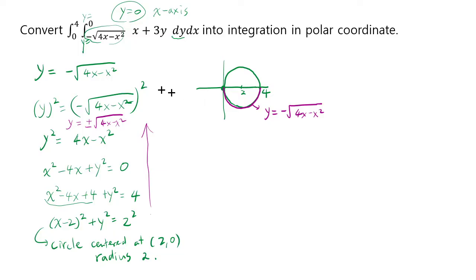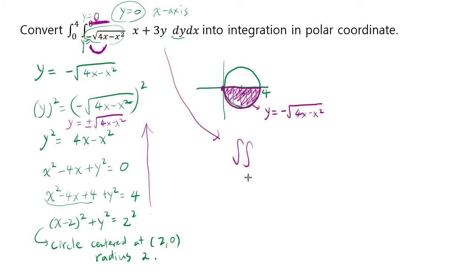So the domain starts from the bottom half circle and goes up to y equals 0, the horizontal x-axis. You start from the curve and end at the x-axis, and because x goes from 0 to 4, the domain spans that interval. We can now rewrite this as the integral over this domain of x plus 3y dA.